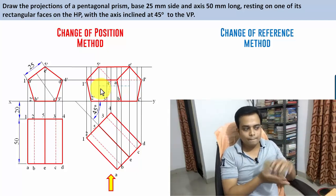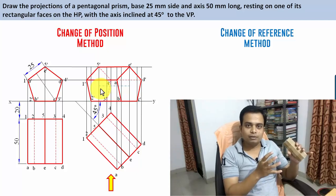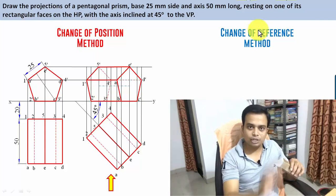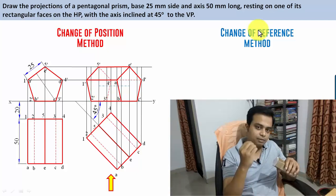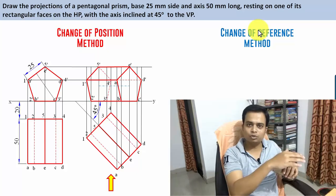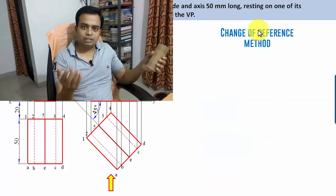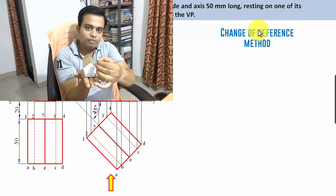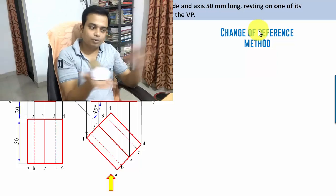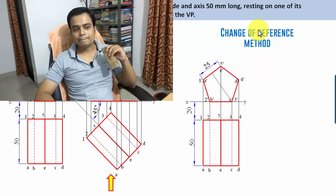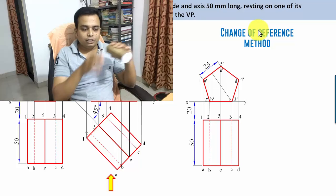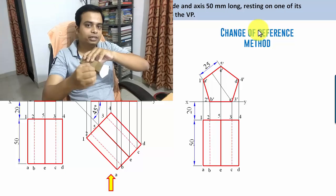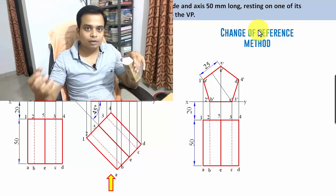The change of reference method or auxiliary plane method takes far less time than the change of position method. The first step — the initial assumption — is the same: we assume the same starting position, begin with the front view, and then make the top view. In the change of position method, we changed the position of the object to keep the axis at 45 degrees, without changing the position of the reference plane — the vertical or horizontal plane.